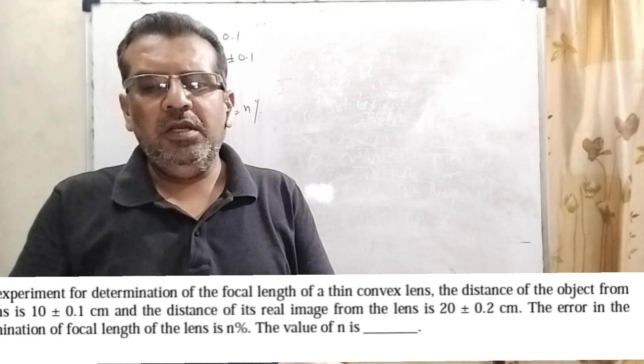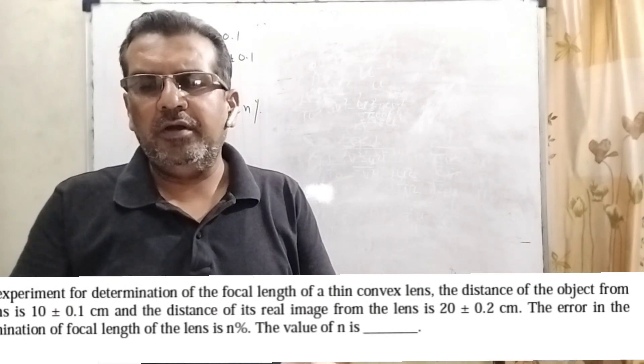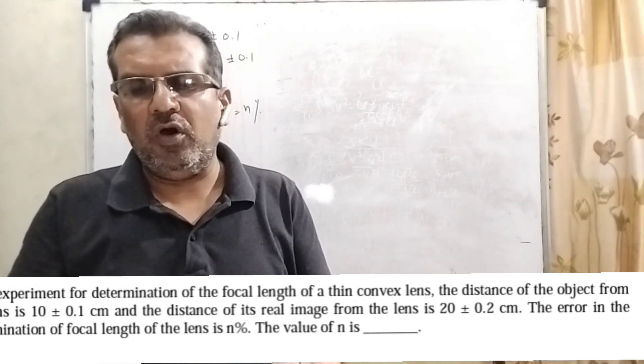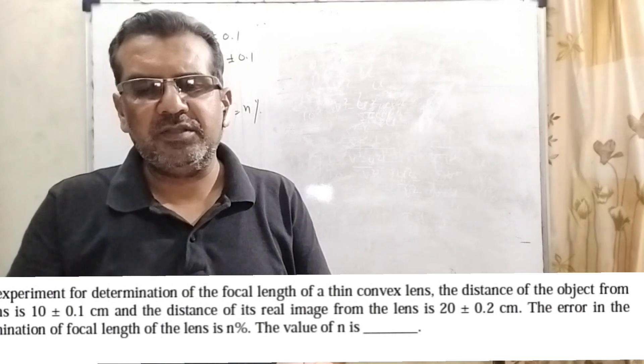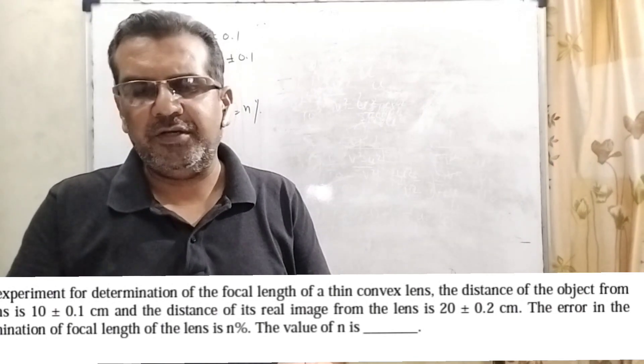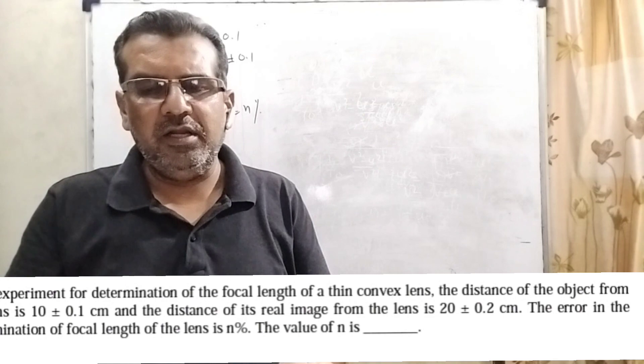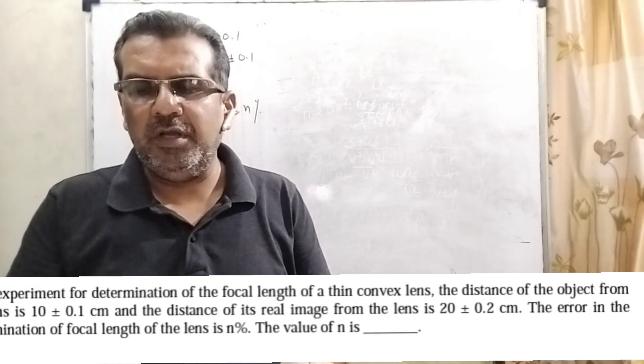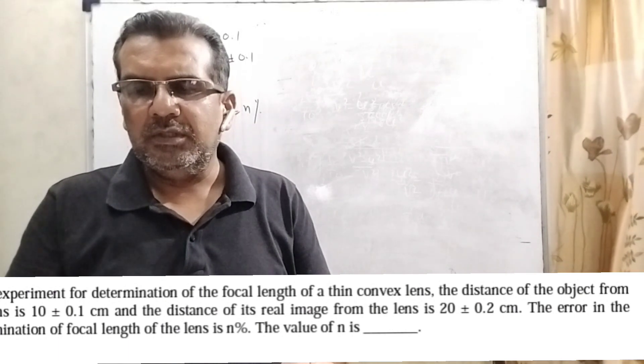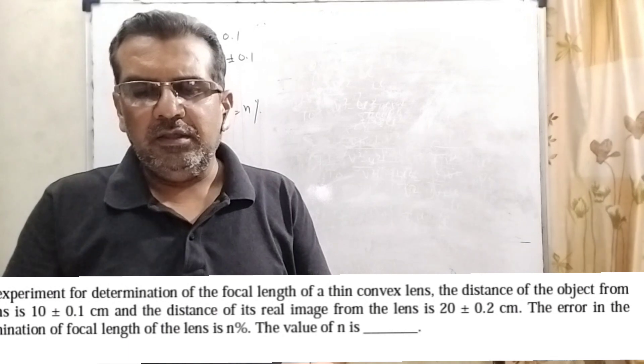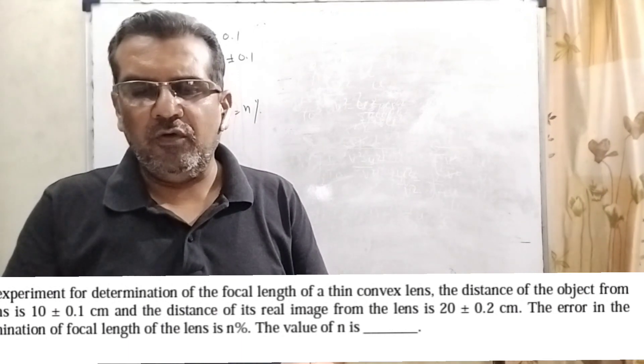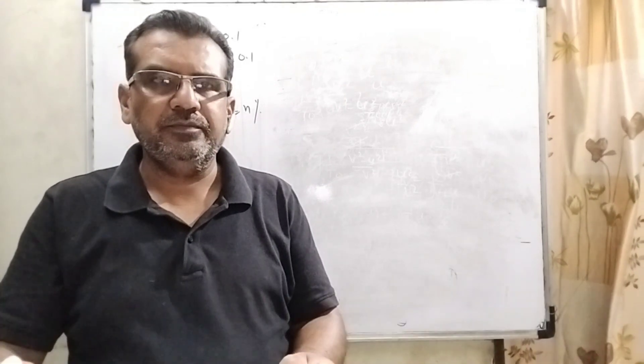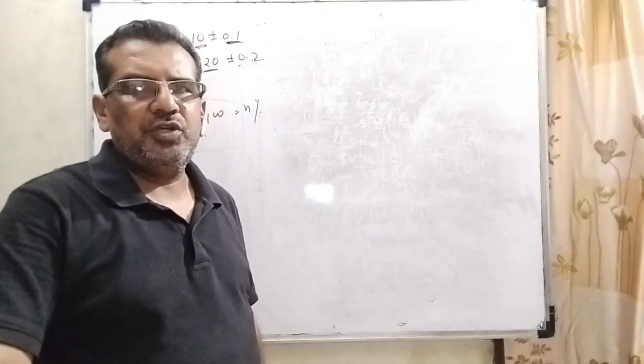Now here is the question. In an experiment for determination of the focal length of a thin convex lens, the distance of the object from the lens is 10 ± 0.1 cm, and the distance of its real image from the lens is 20 ± 0.2 cm. The error in the determination of the focal length of the lens is n percent. The value of n is? This question is from JEE Advanced 2023.